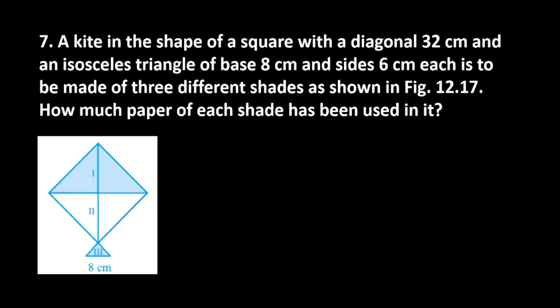Let's start with question number 7. It says a kite is in the shape of a square with a diagonal 32 cm and an isosceles triangle of base 8 cm and sides 6 cm each. Each is to be made of 3 different shades as shown in the figure.